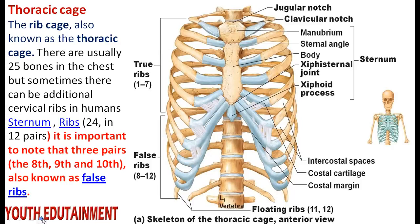The next thing is the thoracic cage. The rib cage is also known as the thoracic cage. There are usually 25 bones in the chest, but sometimes there can be additional cervical ribs. In the human sternum and ribs, it is important to note that three pairs — the eighth, ninth, and tenth ribs — are also known as false ribs.